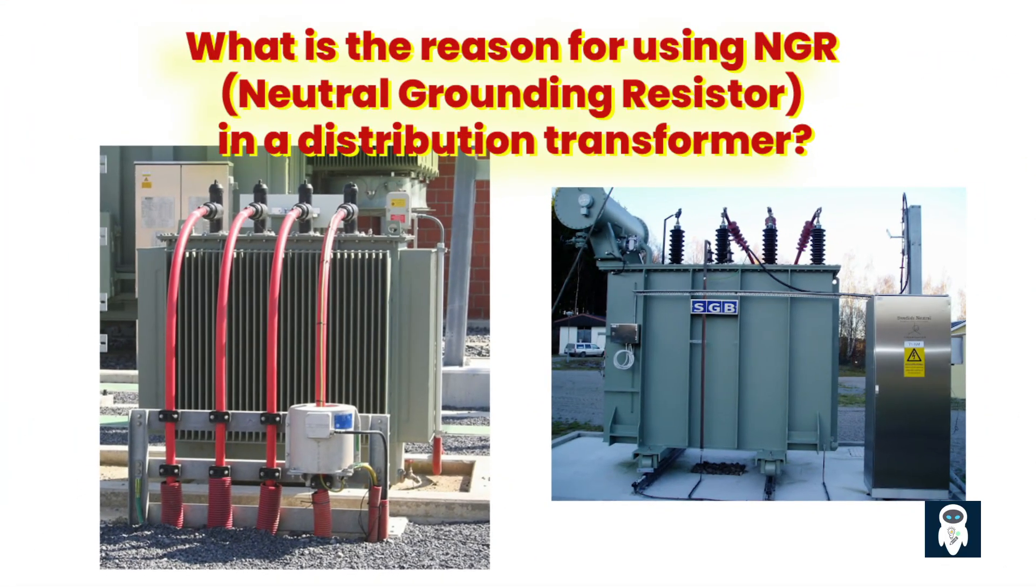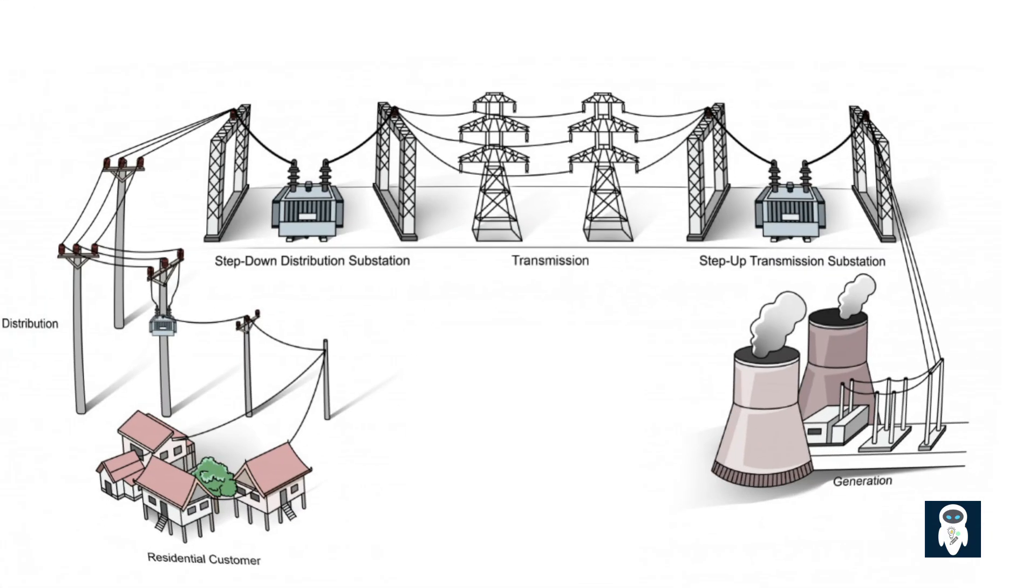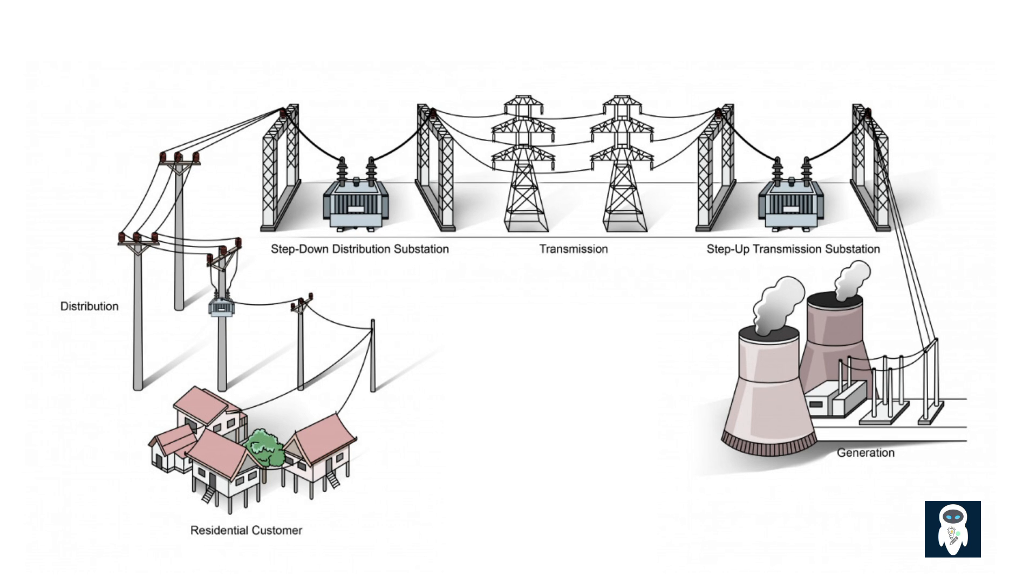Welcome back to our series on Power Transformers. In our previous video, we discussed a variety of transformer-related subjects, including transformer losses and efficiency, the significance of neutral current loss, and the importance of efficient offloading strategies. Today, we will focus our concentration to look into a specific feature that holds essential importance in the area of power transformers, the neutral grounding resistor. We'll explore the main reasons behind using the neutral grounding resistor in power transformers. So, let's get started.